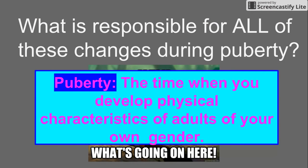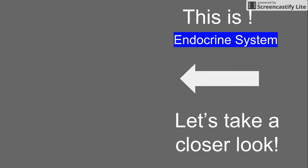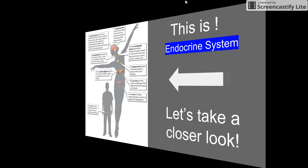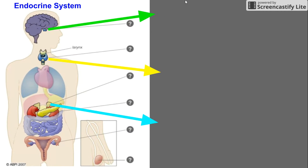What is responsible for all the changes during puberty? Puberty is the time when you develop physical characteristics of adults of your own gender. Let's take a closer look. Some of the glands in the endocrine system are the pituitary gland, also known as the master gland, the hypothalamus, the thyroid gland, parathyroid glands, adrenal glands, thymus gland, pancreas, ovaries in females, and testes in males.